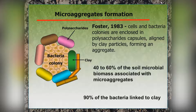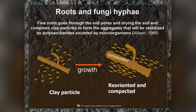When soils are formed, they're formed out of microaggregates. Microaggregates are the very smallest particles of soil, formed from bacteria which give off different exudates. Forty to sixty percent of your soil microbial biomass is associated with these microaggregates, and 90% of the bacteria are linked to clay particles, forming very tiny microaggregates. Microaggregates by themselves tend to seal off. Roots reorient and compact these microaggregates to form macroaggregates.